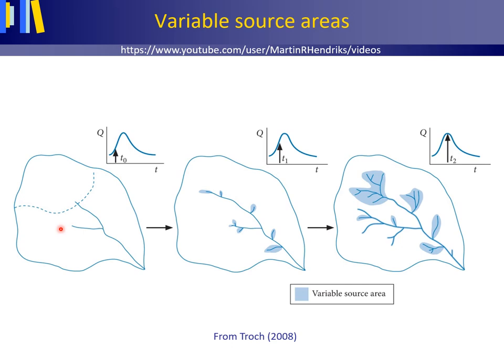The areas that become saturated from below expand upslope and upstream if rainfall continues. This phenomenon has been observed in situ as well as through remote sensing techniques. These saturated areas that contribute to quick flow can expand and contract in size between storms and during the course of a single storm. They are called variable source areas — source areas with the adjective 'variable' because of their expanding and contracting nature.